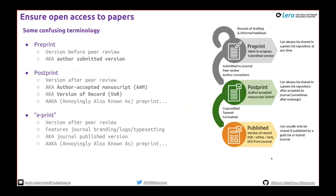Some confusing terminology: a preprint is the version before peer review — also known as author-submitted version. A post-print is typically the version after peer review — also known as author accepted manuscript. That's your Word or LaTeX document with the peer review comments implemented. Sometimes called version of record. Confusingly, 'preprint' is also sometimes used for the post-print. SFI calls it 'author accepted manuscript.' You can often share this on a preprint server — that gives you the green open access route.